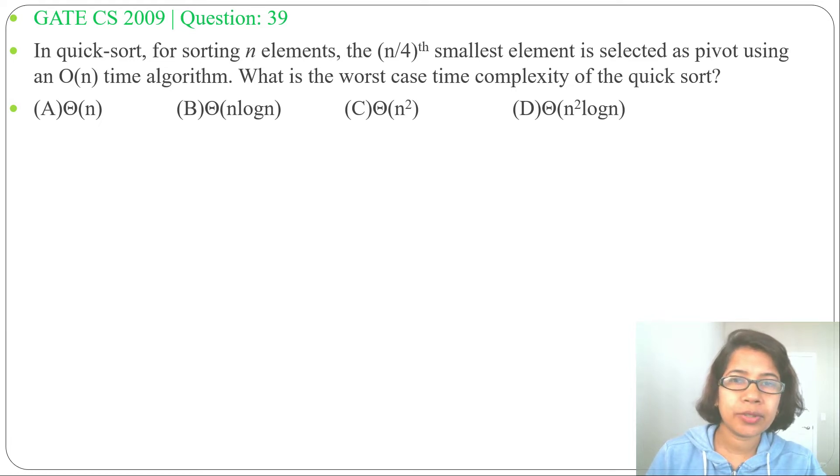Hi, let's look at a previous QuickSort question. This question was asked in GATE CS 2009, Question 39. In QuickSort for sorting n elements, the (n/4)th smallest element is selected as pivot using an O(n) time algorithm. What is the worst case time complexity of QuickSort?